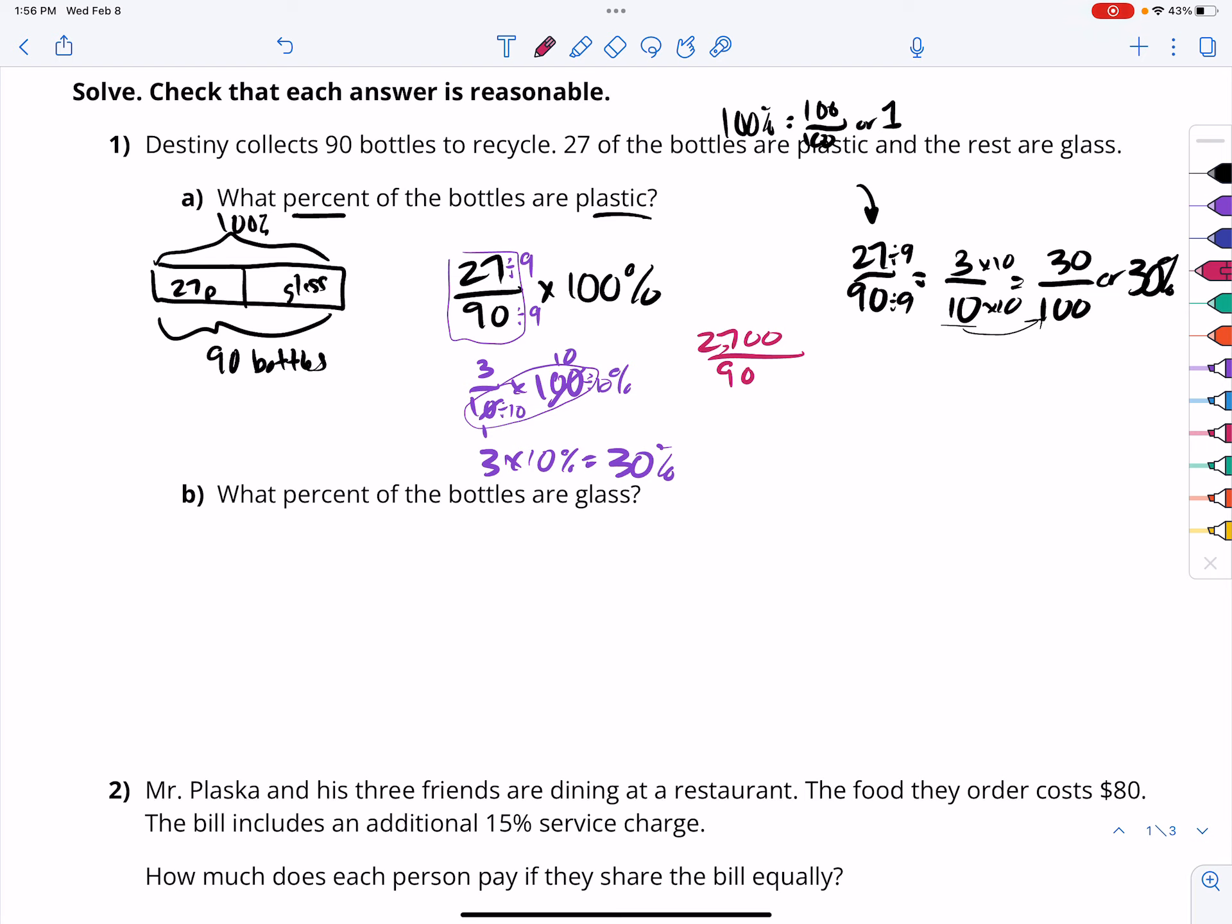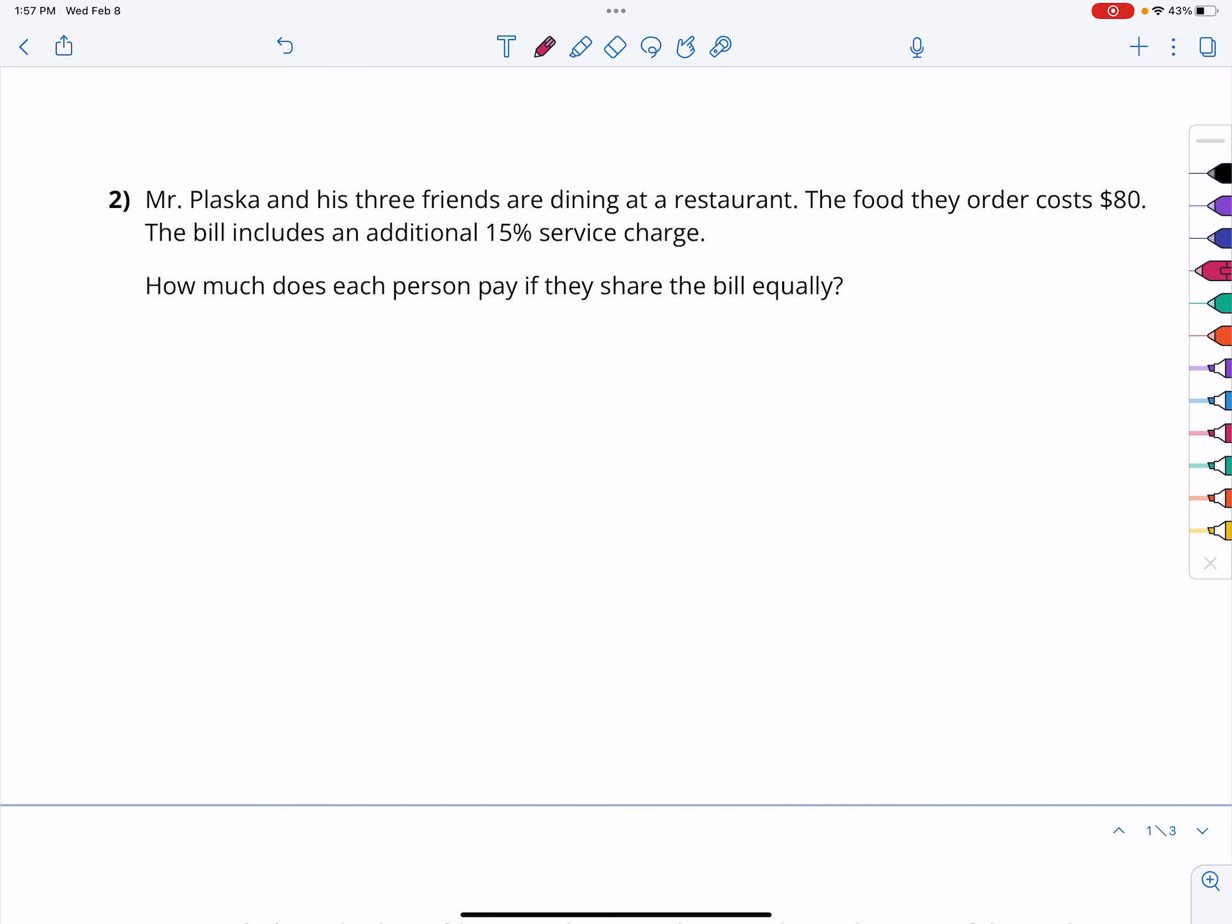If 30% of the bottles are plastic, that would mean that from the 100%, 30 of them are plastic, the rest are glass, and that rest amount is 70%. So, 30% are plastic, 70% are glass.